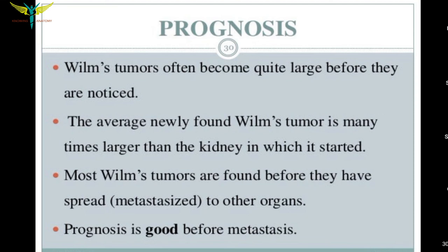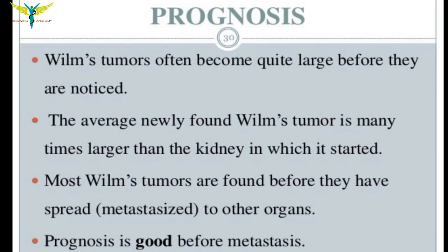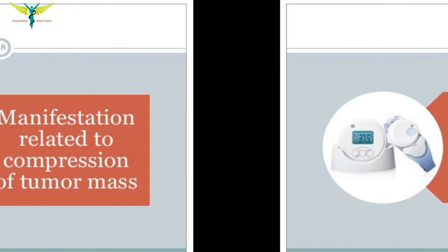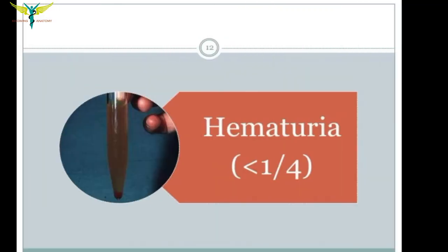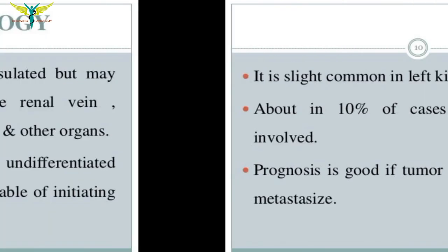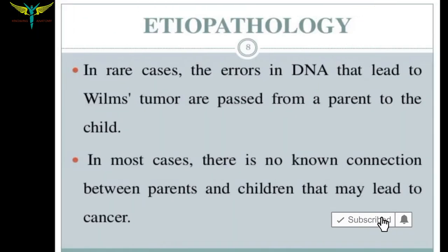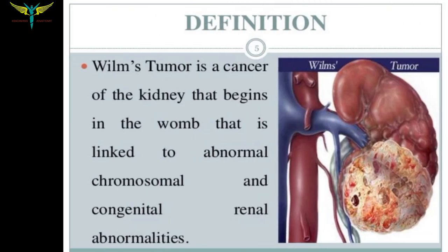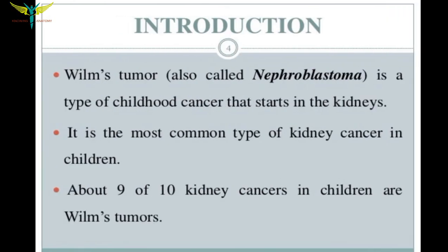Regarding prognosis, Wilms' tumor often becomes quite large before it is noticed — the average newly found tumor is many times larger than the kidney in which it started. However, most Wilms' tumors are found before they have spread to other organs, so the prognosis is generally good. In summary, Wilms' tumor or nephroblastoma has five stages, is more common in the left kidney, is mostly unknown in origin, and is hereditary only in rare cases.